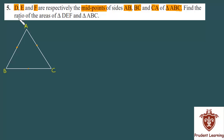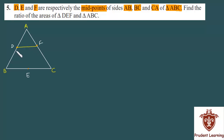You have a triangle ABC. Its midpoints are: side AB midpoint is D, side BC midpoint is E, and side AC midpoint is F. Now, if you join the 3 midpoints, then one more triangle will form — triangle DEF.